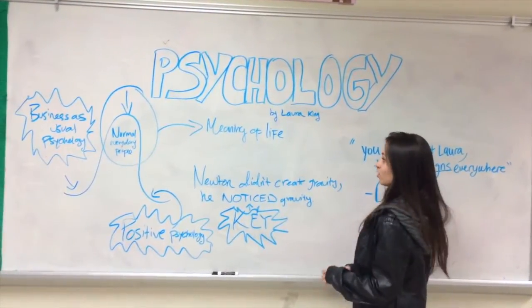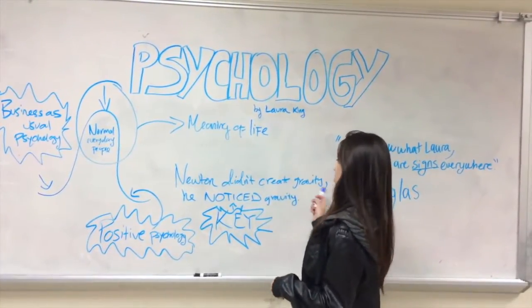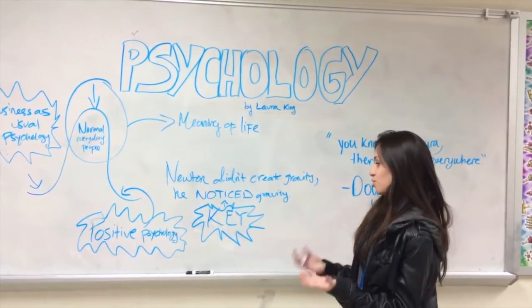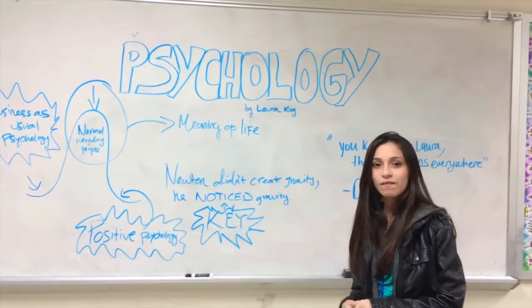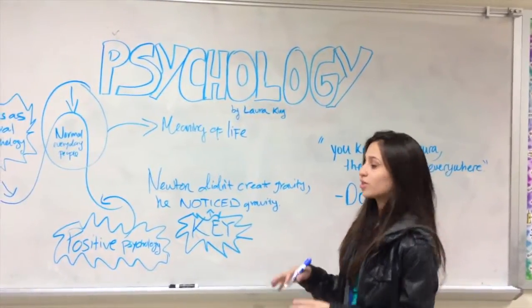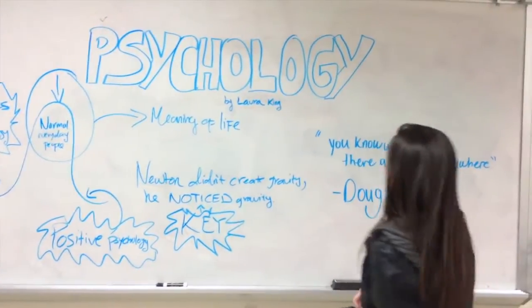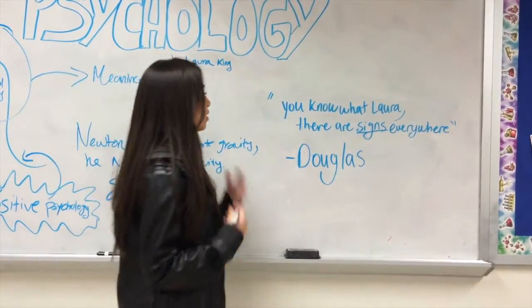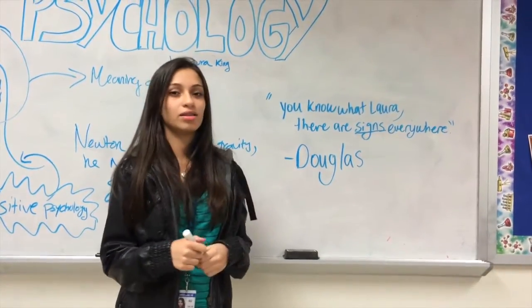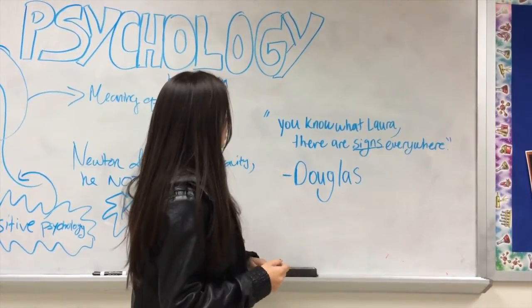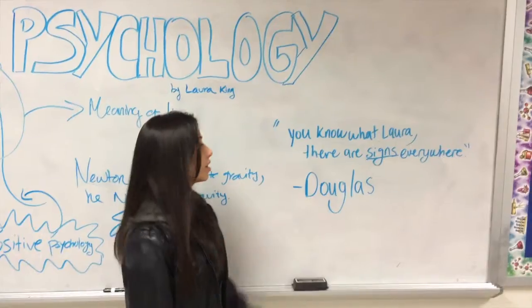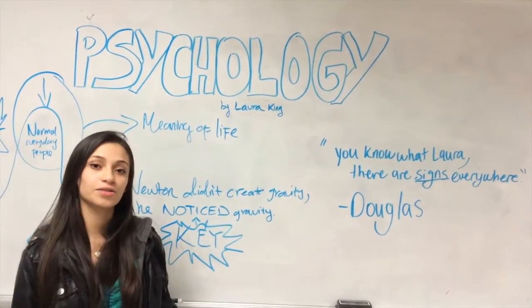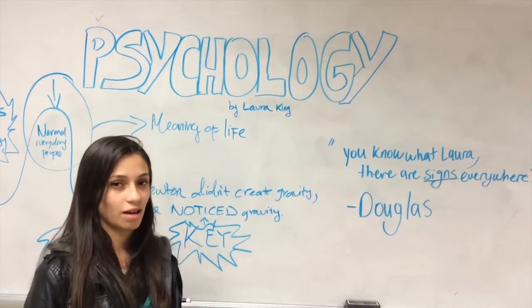Something very meaningful that Laura King said was that Newton didn't create gravity, he noticed gravity. What she was trying to portray is that we should notice the meaning of life. It's not really about creating a meaning, it's noticing the meaning, because it's always there. The meaning of life is not something we can define — it's more like something that we live every day. This is a quote by Douglas, one of Laura's students: there are signs everywhere, meaning throughout your life there's always going to be a sign that there's meaning.